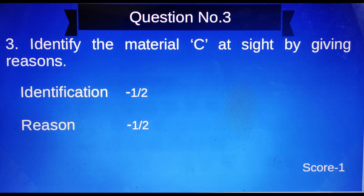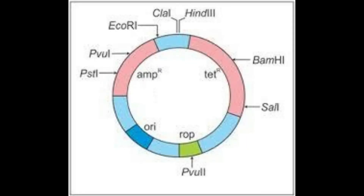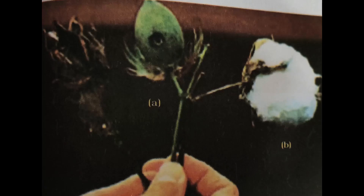Question number three: Identify the material C at sight by giving reasons. Identification: half score; reason: half score. Material C involves biotechnology photographs — three choices: first, cloning vector; second, bioreactor; third, BT cotton. Identify the material C and write one reason in one sentence.